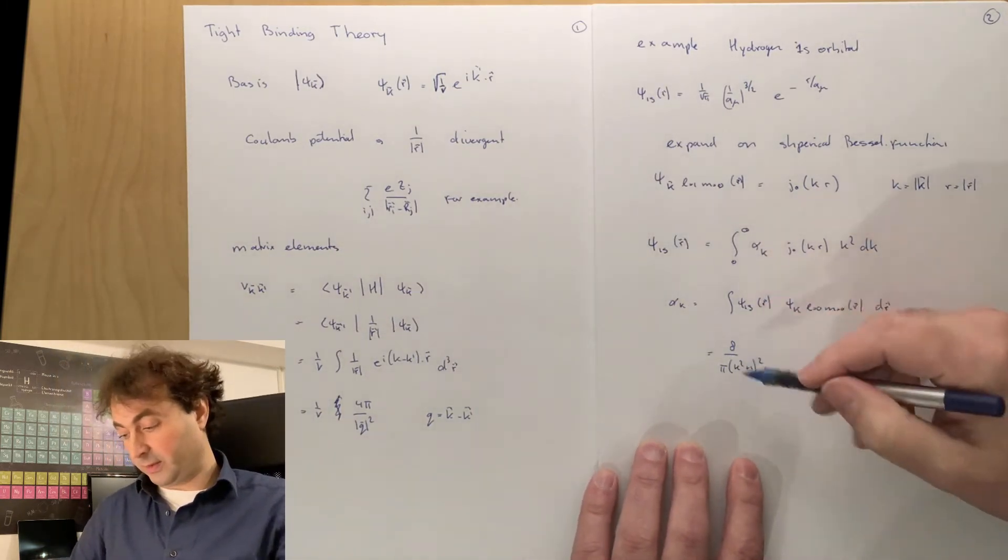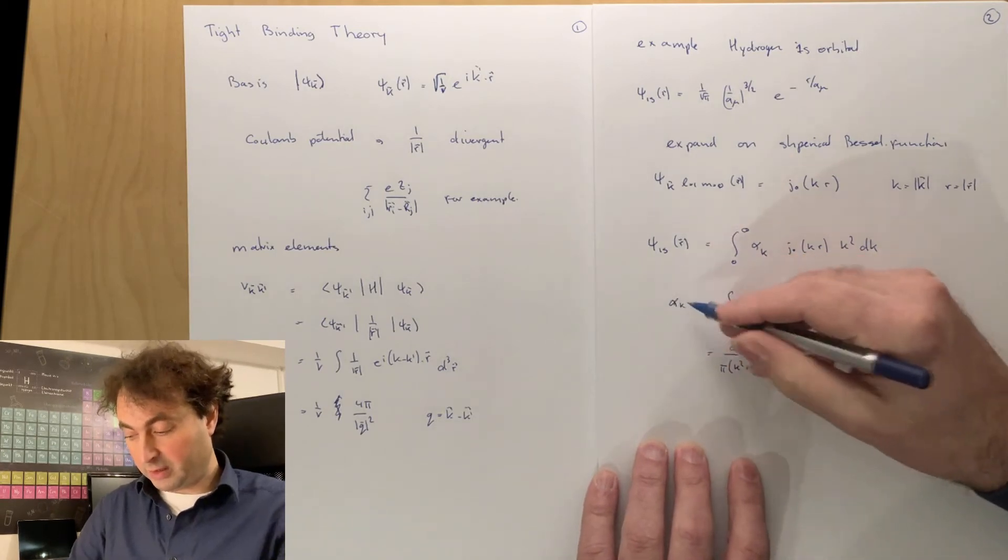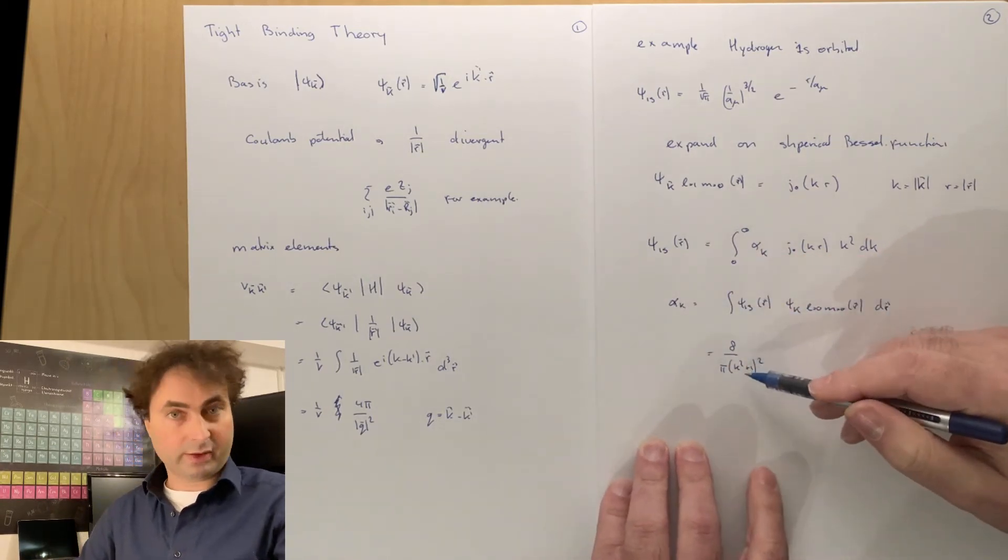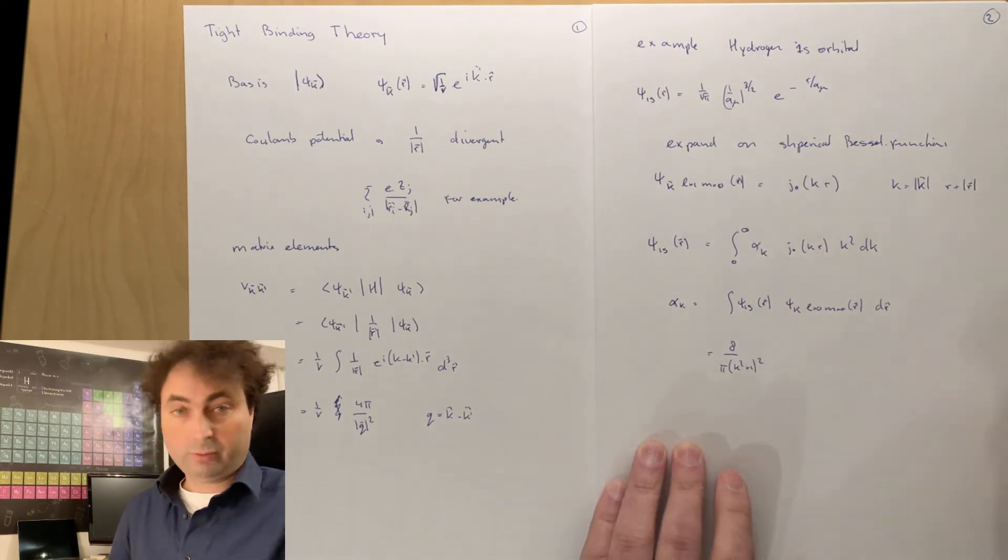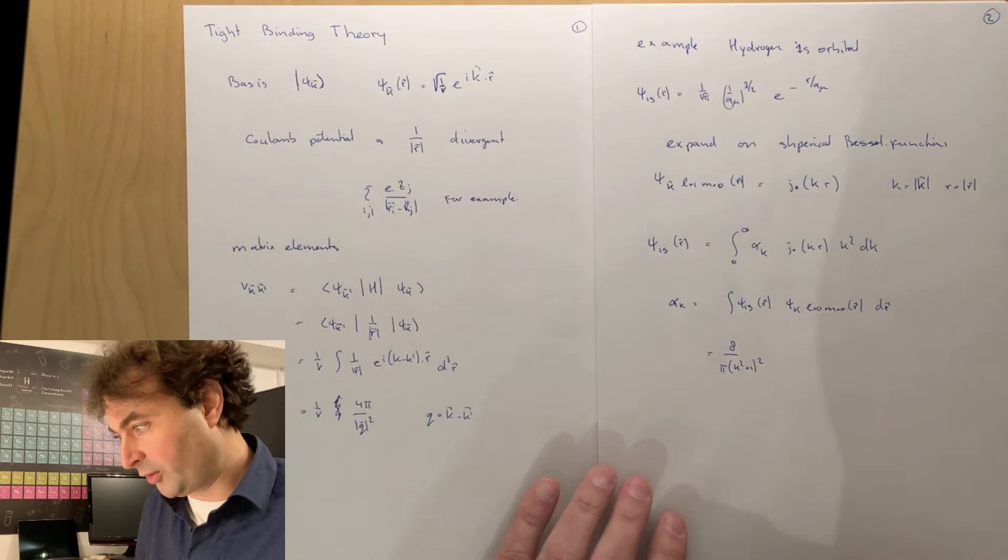So we see that we need many different wave vectors. And especially when the wave vector gets large, the pre-factor decays as 1 over k to the fourth, which is convergent, but not extremely fast.